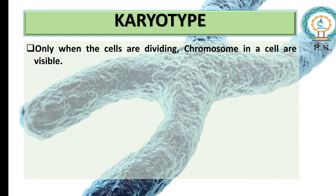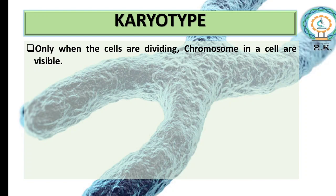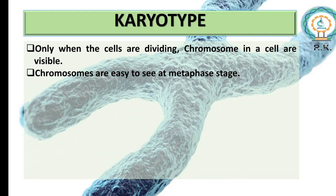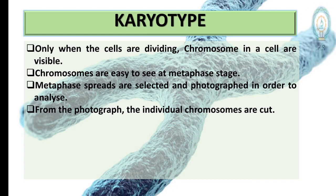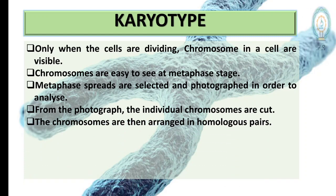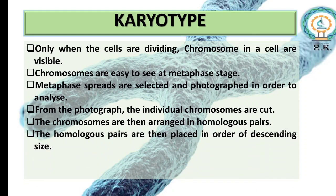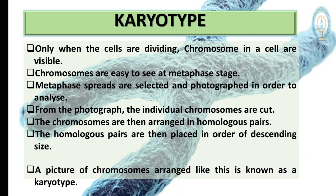Karyotyping is only performed when cells are dividing, because chromosomes in a cell are visible only during division. You will clearly be able to see chromosomes only at the metaphase stage. Metaphase spreads are selected and photographed for analysis. From the photograph, individual chromosomes are cut out, then arranged in homologous pairs placed in descending order according to size.